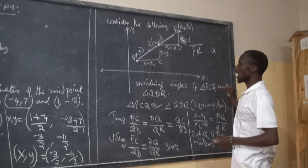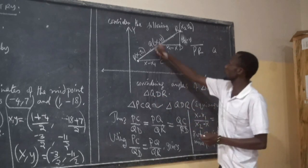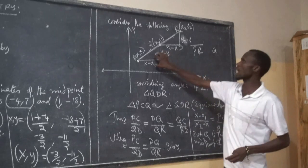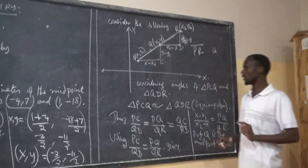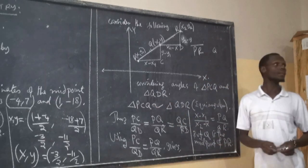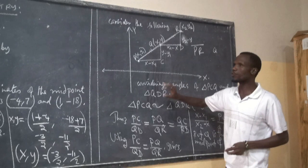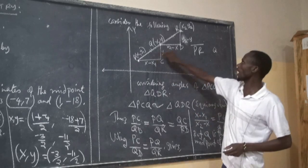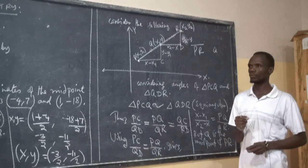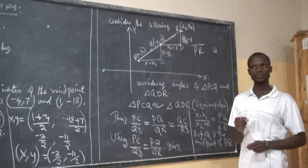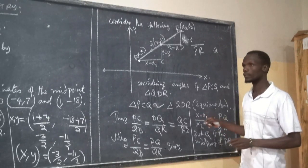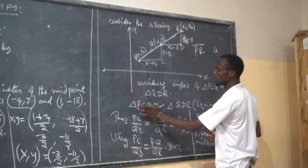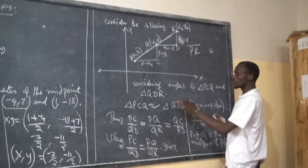Considering angles, we have triangle B, C, D and triangle Q, D, R. By similarity, these two triangles are congruent — triangle PCQ is similar to triangle QDR. This is because Q is the midpoint and the triangles share corresponding angles and proportional sides.